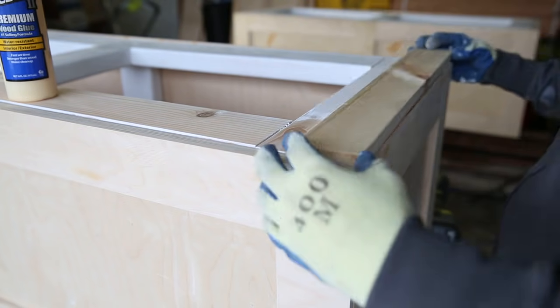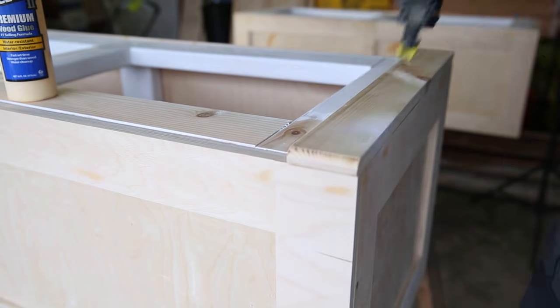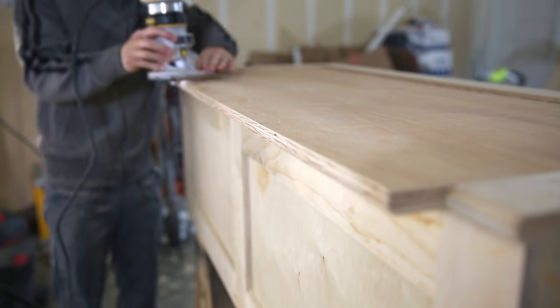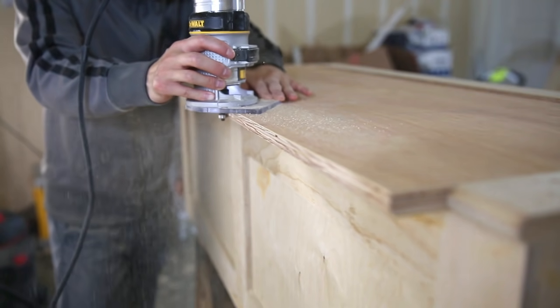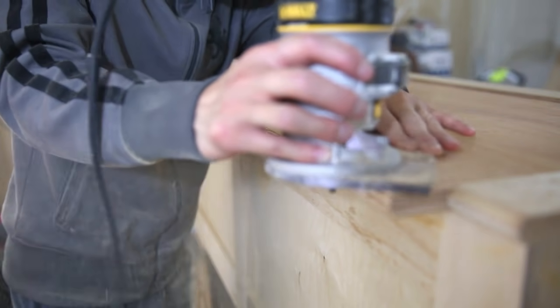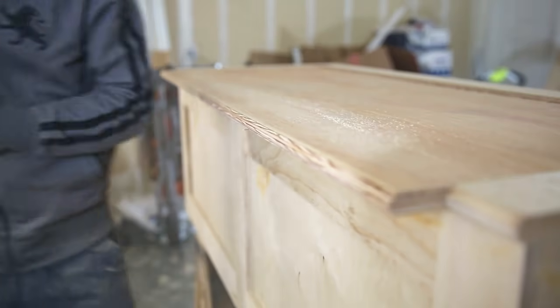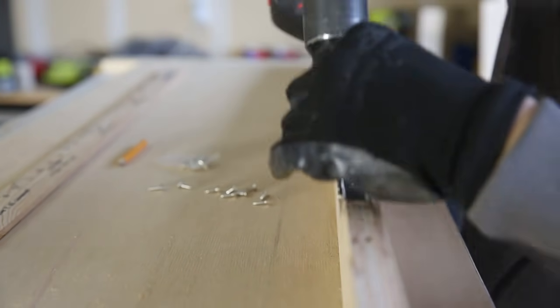And to make the round over edge look, I had the lip come out 1 quarter of an inch past the frame, and then I rounded it over with the router. To attach the lid to the bench, I used piano hinges.